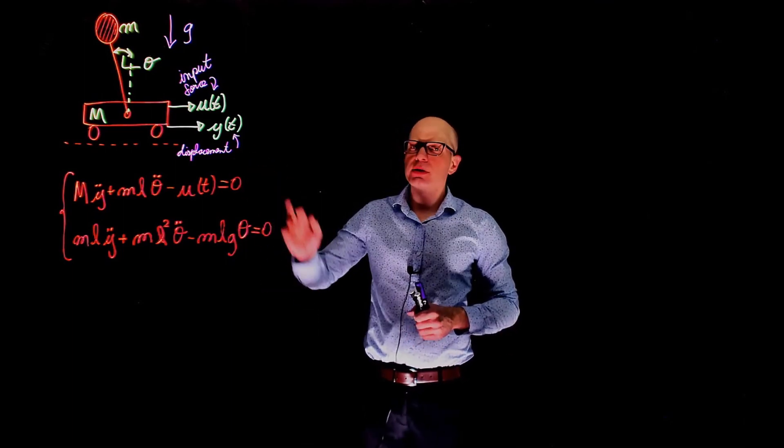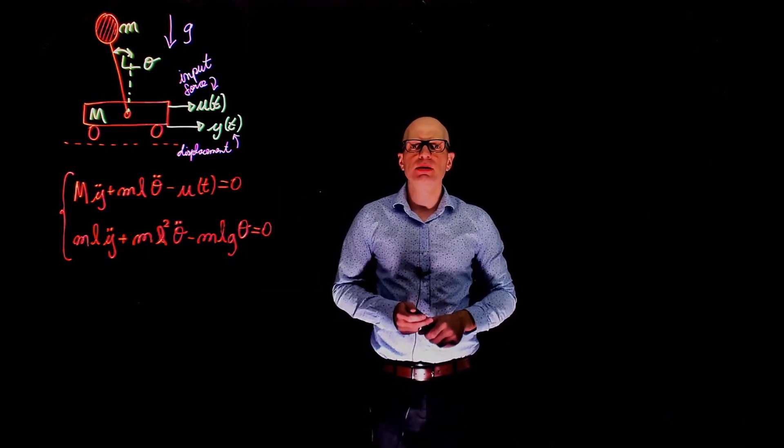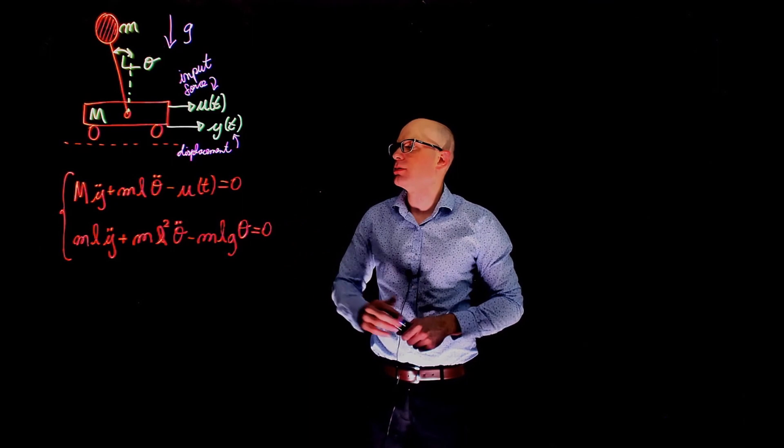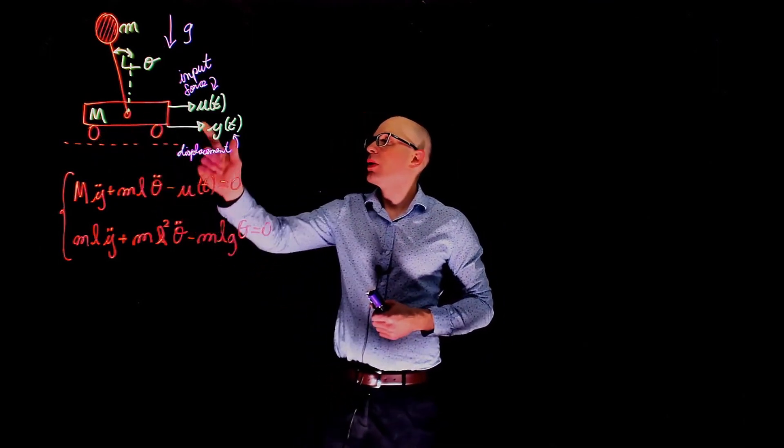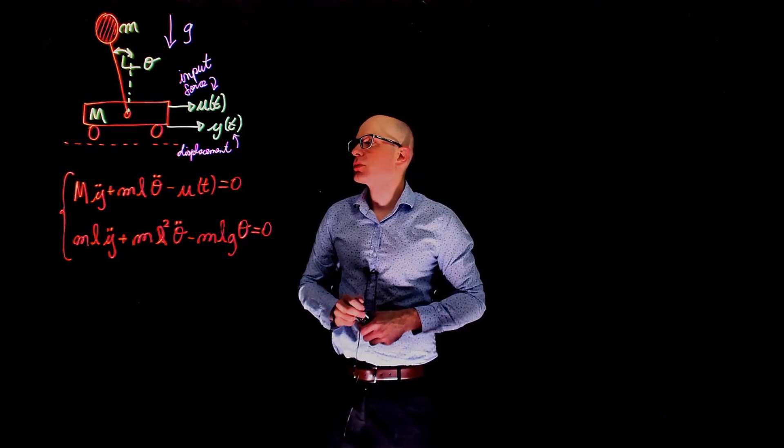In this example we have this inverted pendulum. We are going to create a state space model representation for this system. In the inverted pendulum we have a cart whose mass is m.